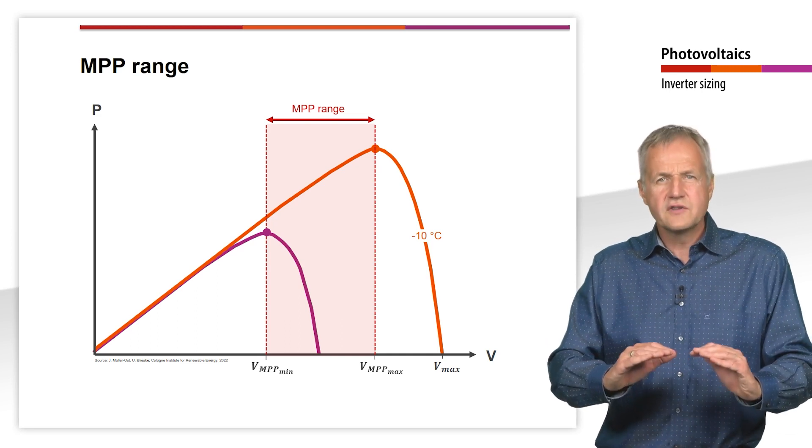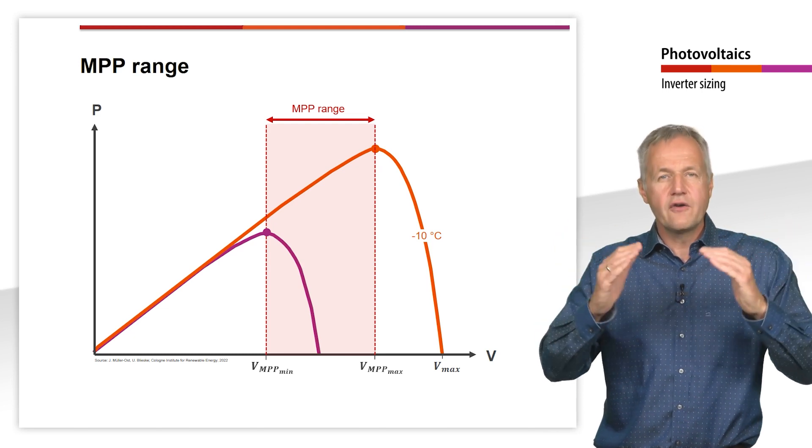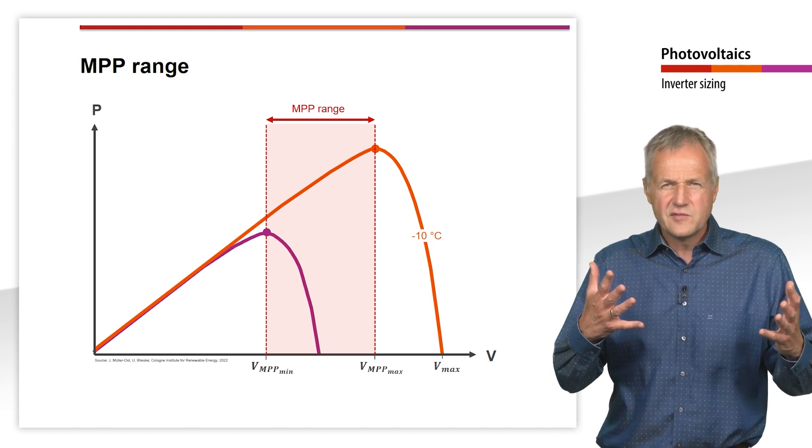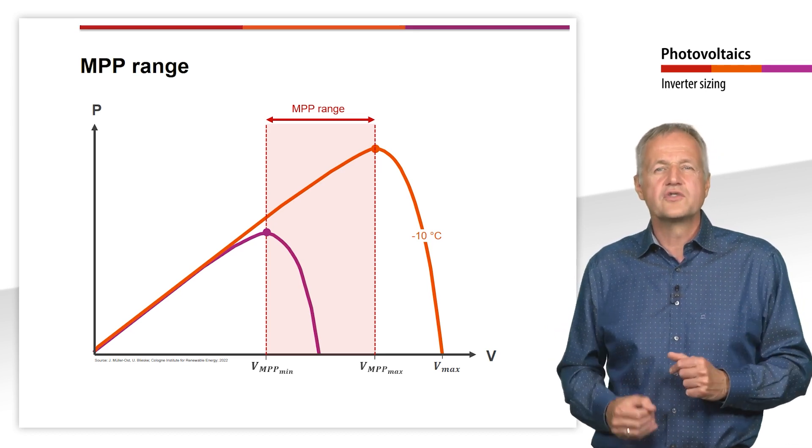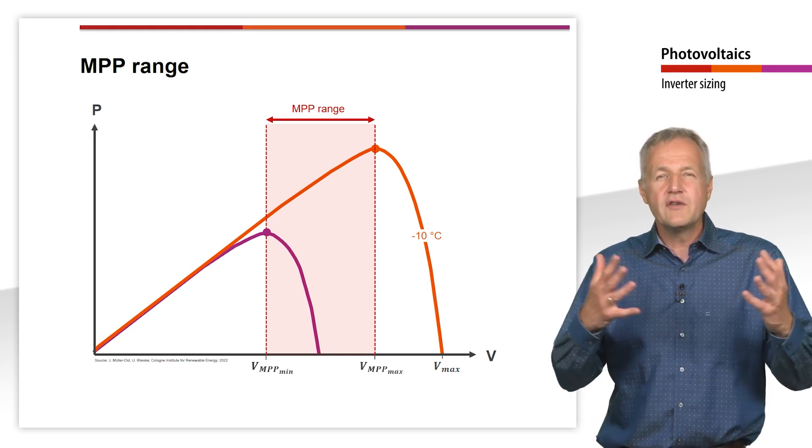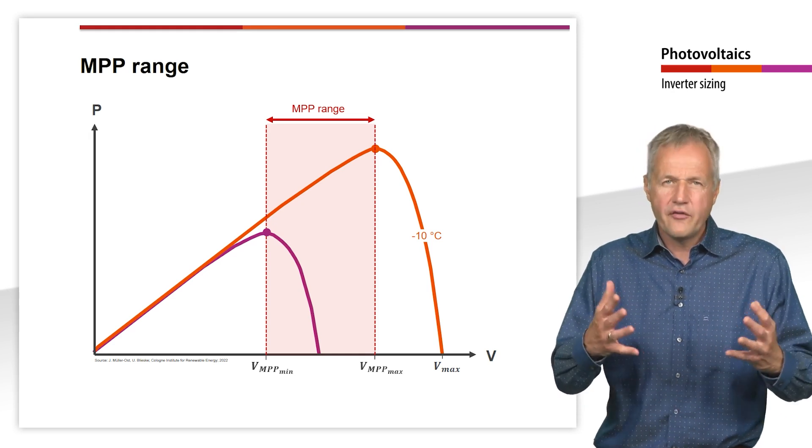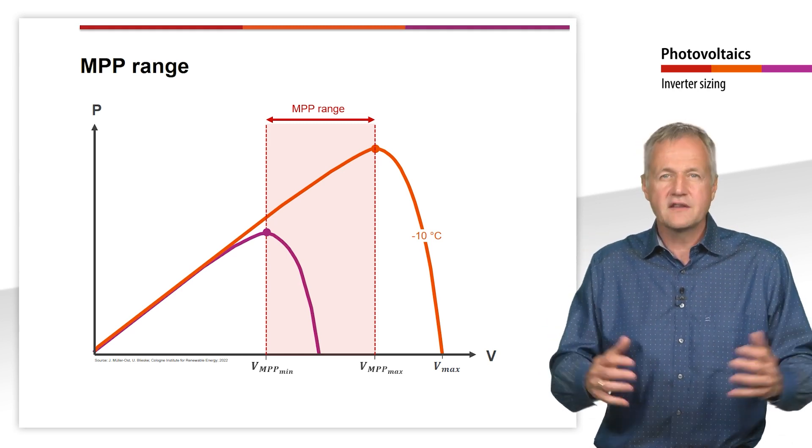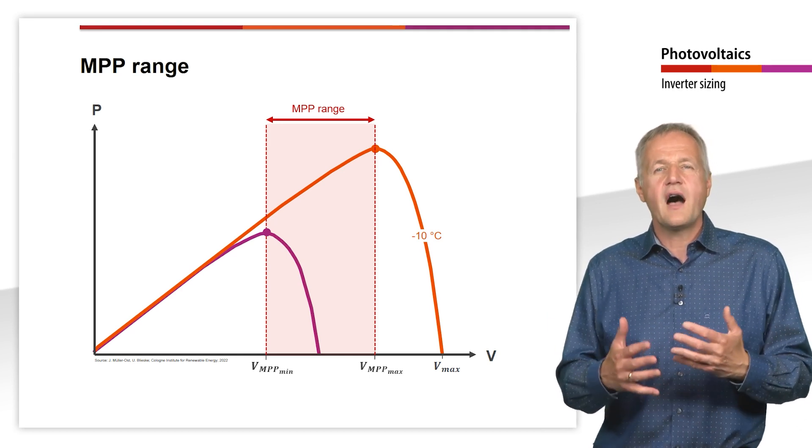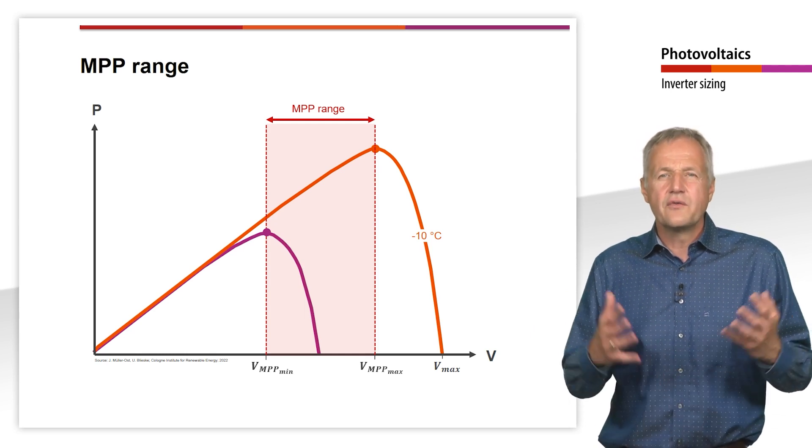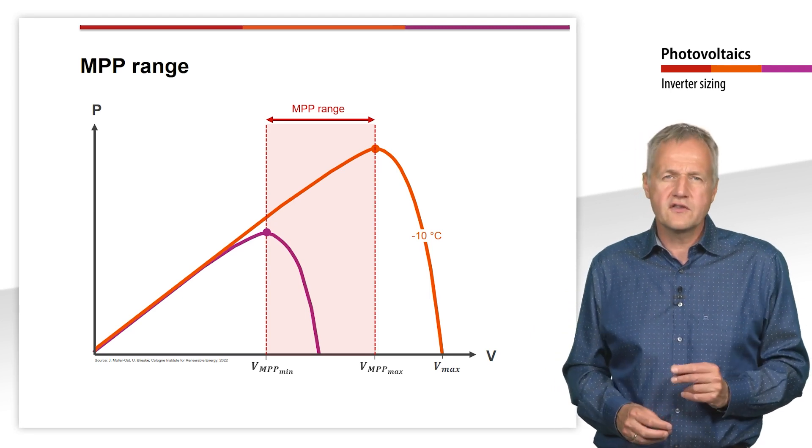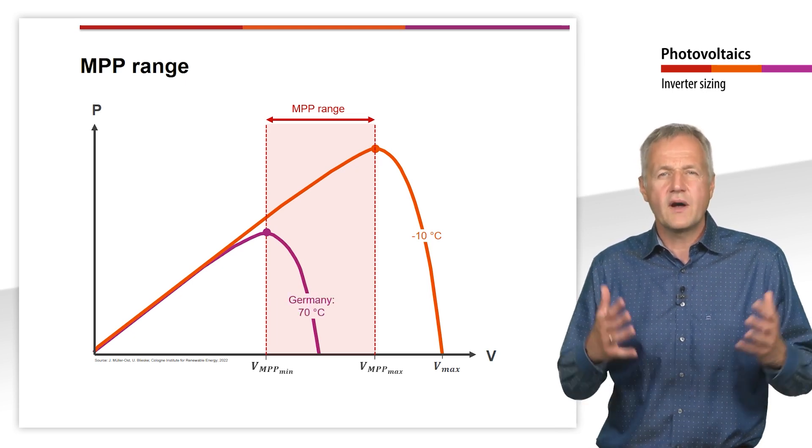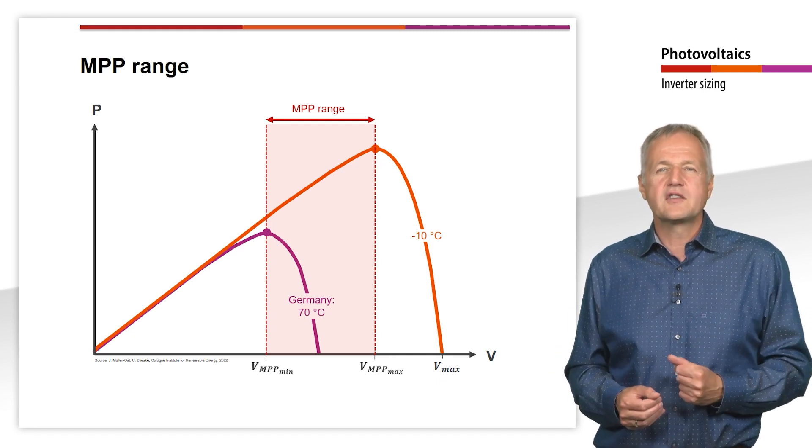This occurs in exactly the opposite case to the situation just considered. The smallest voltage results at very high temperatures with simultaneously very low irradiance. The highest module temperature to be expected also depends on the location, of course. For systems in Germany, 70 degrees Celsius are assumed, which can realistically be reached, especially in poorly ventilated roof-mounted or in-roof systems. However, this maximum temperature will almost never occur together with a very low irradiance since the high module temperature is caused by high direct irradiance. In addition, the irradiance has only a comparatively small influence on the voltage. Therefore, we assume a module temperature of 70 degrees Celsius and an irradiance of 1000 W per square meter for the calculation of the maximum MPP voltage.